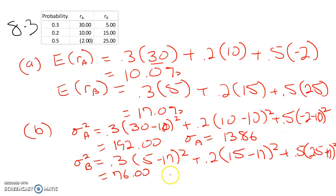Now we take the square root of that. You get the standard deviation for B. And that is 8.72.